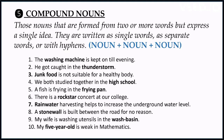Compound nouns are those formed by combining two or more words, and as a whole they function as one single idea. For example, 'washing machine' — two words but one idea, it's the name of an object. 'Thunderstorm' — two nouns together. 'Junk food' — two nouns acting as one idea. You can write a compound noun as a single word like 'thunderstorm', or as separate words like 'washing machine'.